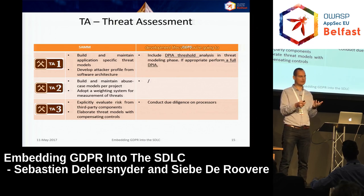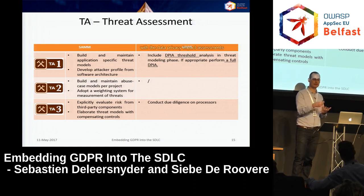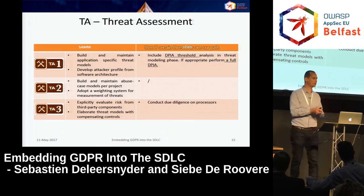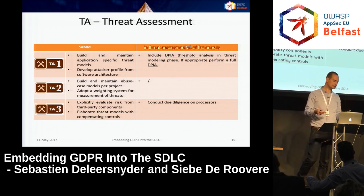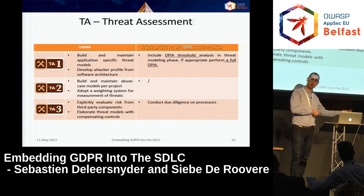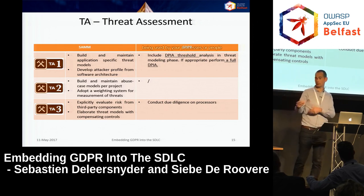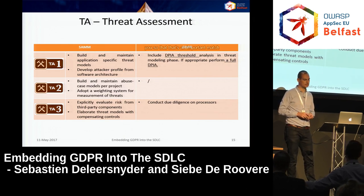Combined with threat assessment, you do a Data Privacy Impact Assessment. Typically you start with a threshold questionnaire, and if certain thresholds are passed you proceed to a full DPIA. Another aspect is evaluating risk from third-party components — from suppliers or processors running software functionality for you. This maps well to the due diligence checks you must conduct on processors that handle data for you.